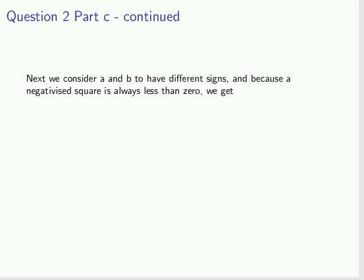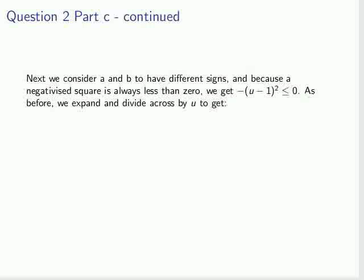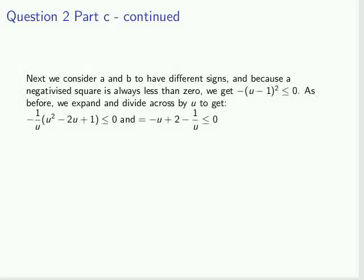So the next part, the next and final part, is where a may have different signs. So we can say that a negatived square is always less than zero. And as before, we expand and divide across by u. And again, what we get is a case where we can isolate 2 on one side of the inequality, or minus 2 rather. We must subtract 2 from either side. So that we get -u - 1/u must be less than or equal to -2.